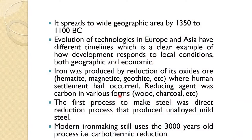The first process to make steel was the direct reduction process, which produced unalloyed mild steel. Modern iron making still uses this 3000-year-old process known as carbothermic reduction, because carbon is the main reductant — and that is how it is known.